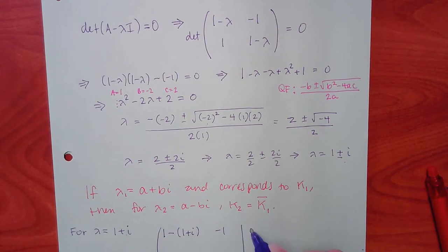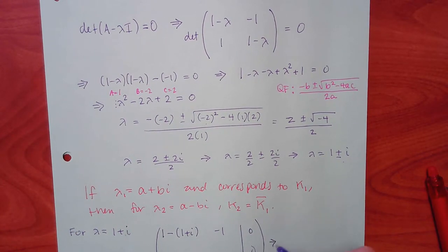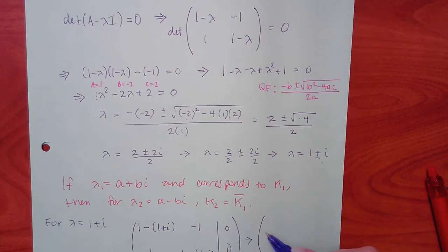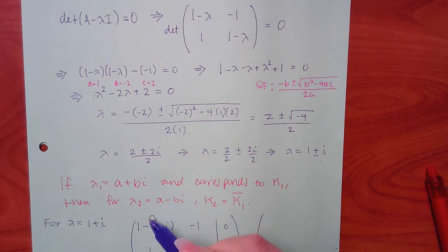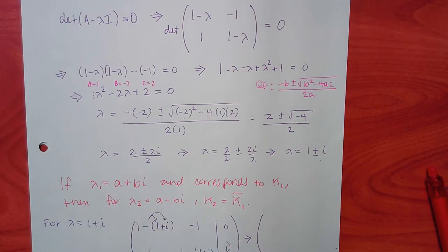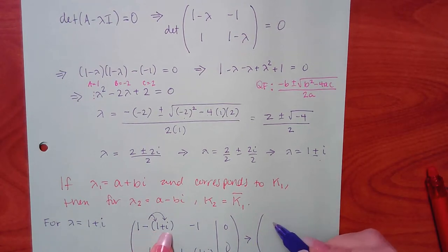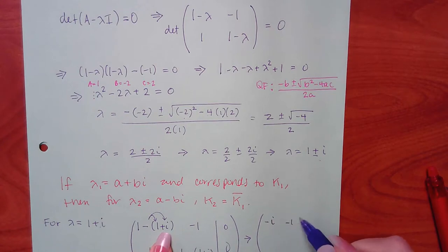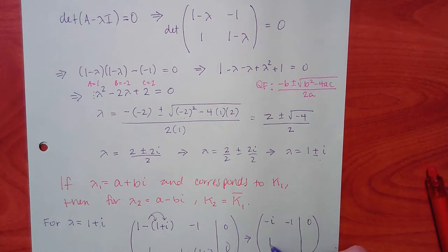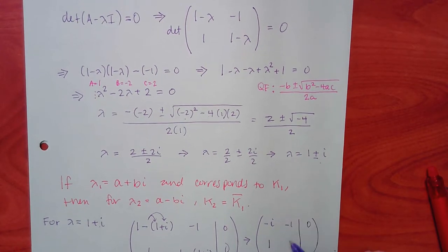Both diagonal entries become negative i, and the off-diagonal entries stay the same. To solve this matrix, we can swap rows if one already has a convenient leading entry — that's one of the three allowed row operations.